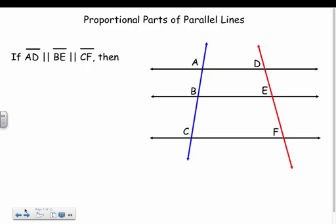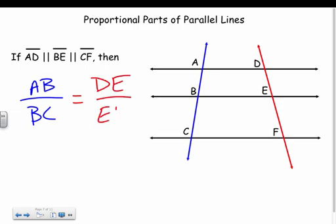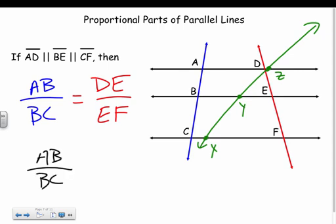For Proportional Parts of Parallel Lines: if three parallel lines are cut by any transversals, we can set up proportional statements. For example, AB over BC equals DE over EF. It also works for any other transversal drawn through those three parallels — say with points X, Y, Z — where AB over BC equals ZY over YX.